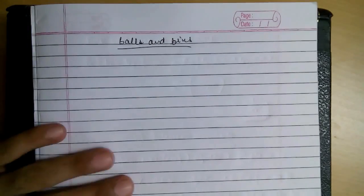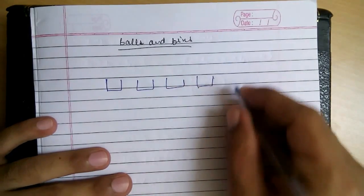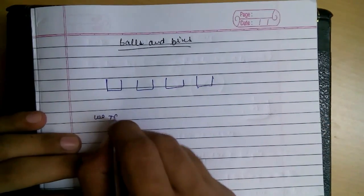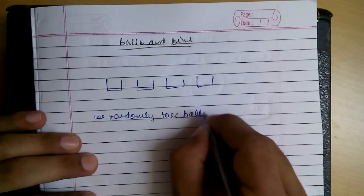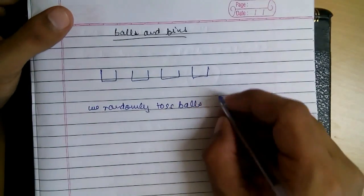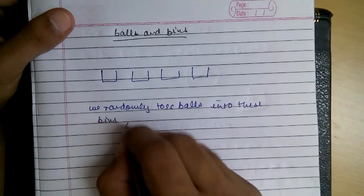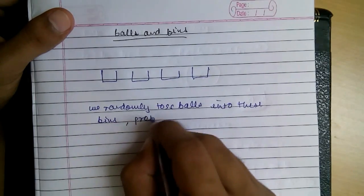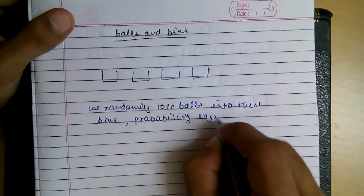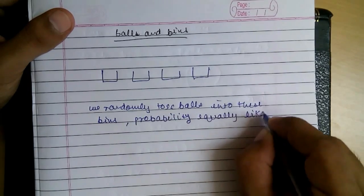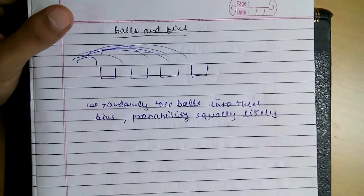What we do in this is that there are, say B bins. We randomly toss balls into these bins and the probability is equally likely that they can end up in any of the bins.